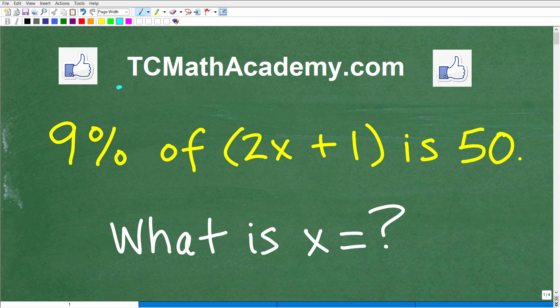Hello, this is John from TC Math Academy, and what I have for you here is an interesting percent algebra problem. Matter of fact, let me go ahead and read the prompt to you. It says 9% of 2x plus 1 is 50. What is x?